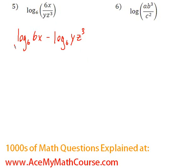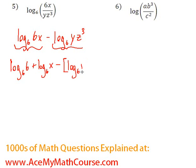Now since we're multiplying 6 and x, we can just split that up as well. Log base 6 of 6 plus log base 6 of x minus, now I can also split up the second log. I'm just gonna open some square brackets here. That'll make things easier. You can get log base 6 of y plus log base 6 of z cubed.